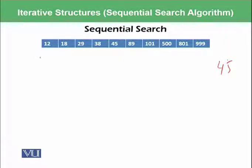We will start from here from 12 and we will compare whether this 45 which we want to search is equal to 12 or not, and we will keep doing it until we find 45. If we want to search 800, that 800 cannot be found in this list and when this list ends, this algorithm will finish, this iterative structure will finish.